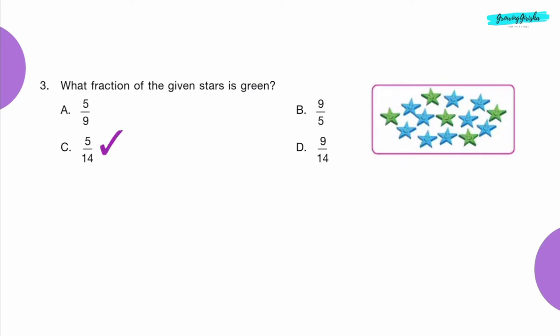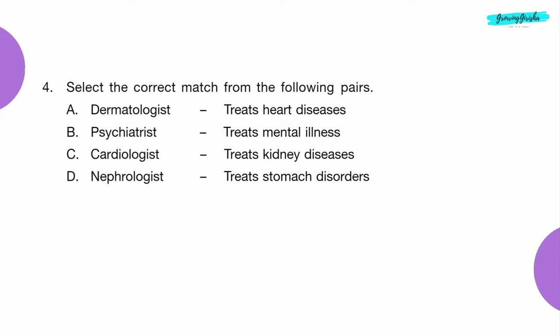Question 3: What fraction of the given stars is green? Option C: 5 by 14.